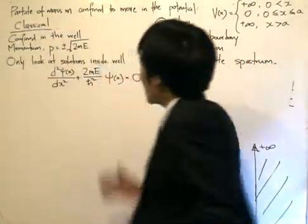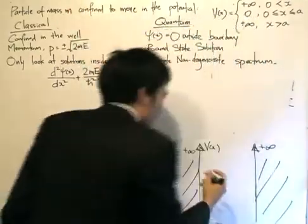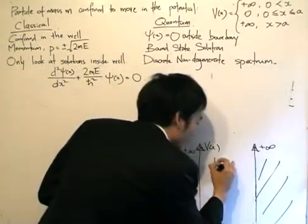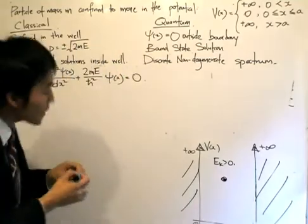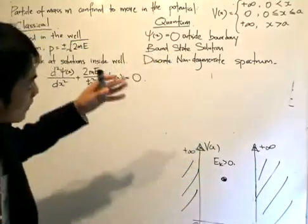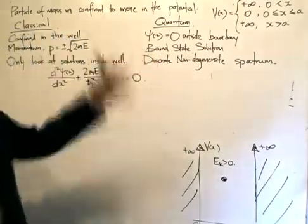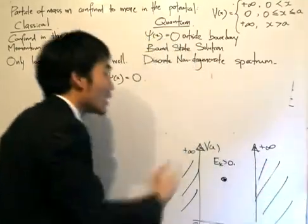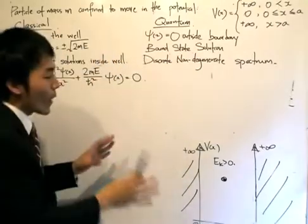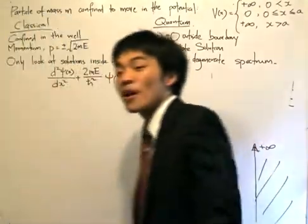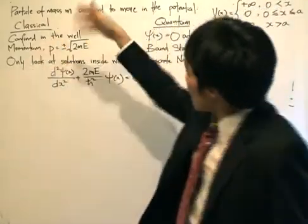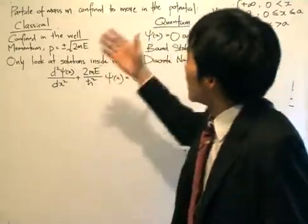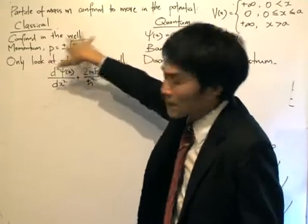In the classical picture, we can immediately say that the particle is confined inside the well — no surprise about that. For a classical particle, the kinetic energy is always greater than zero. As the particle moves toward either wall, the energy becomes E minus V, and since V is infinite it drops to negative energy, so the particle is reflected and trapped inside. The momentum is p = ±√(2mE), with no restrictions on E, so basically no restrictions on momentum either.